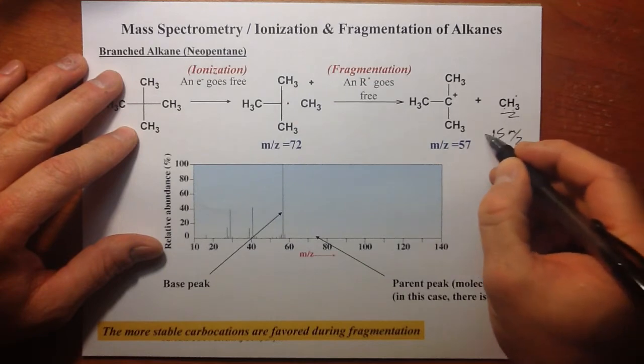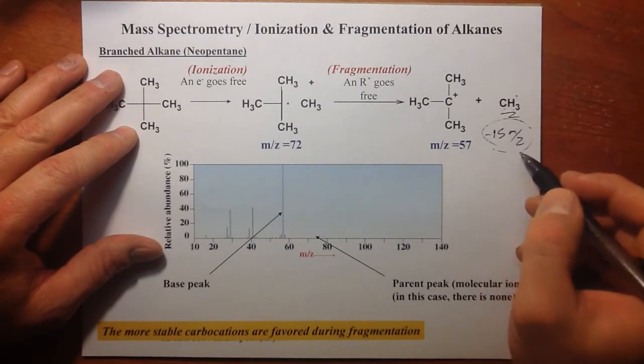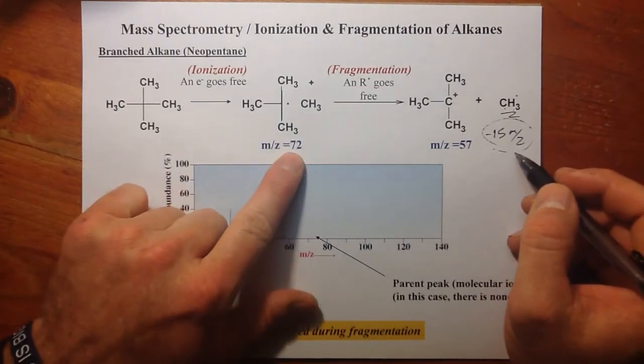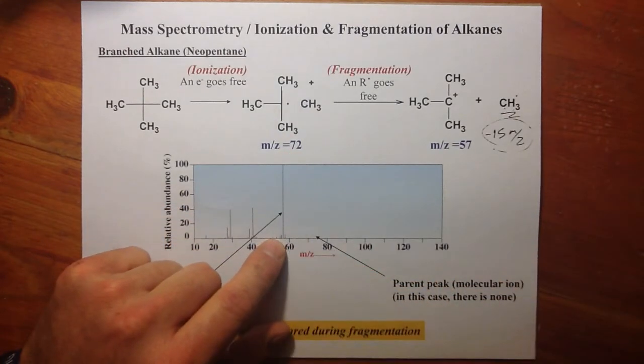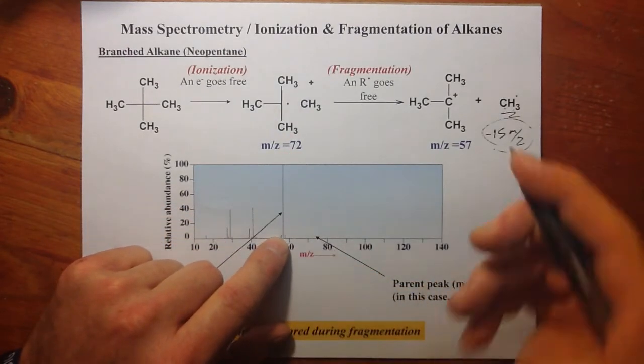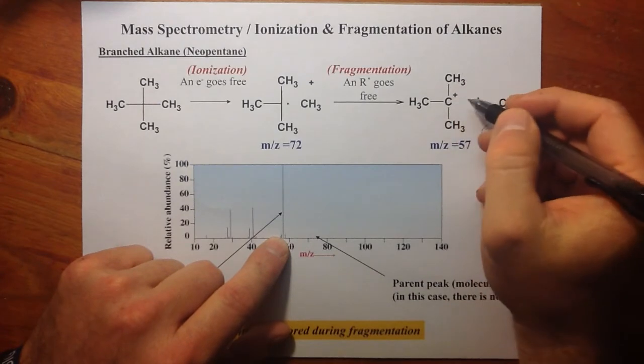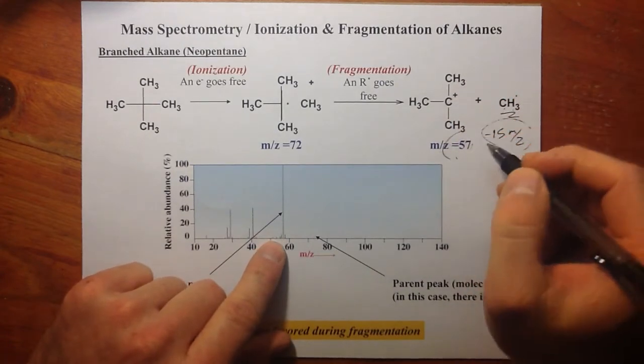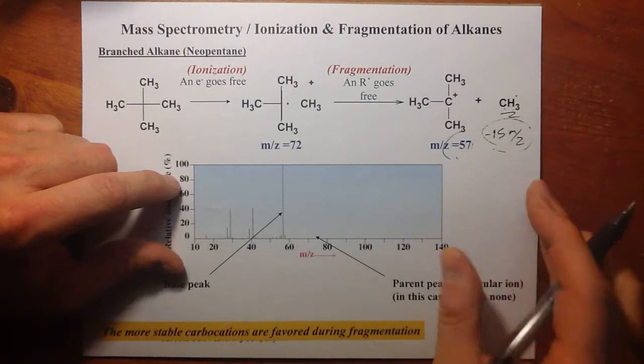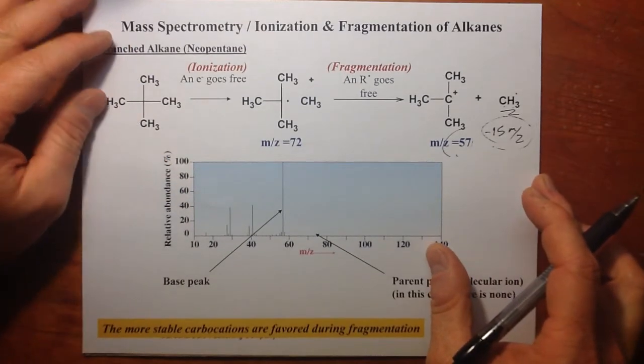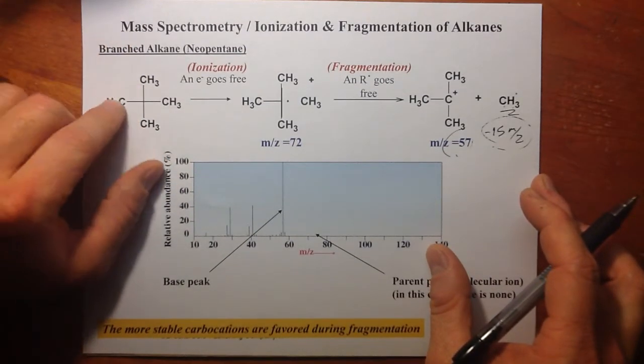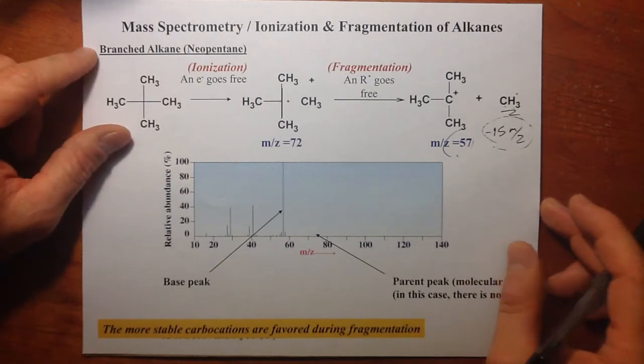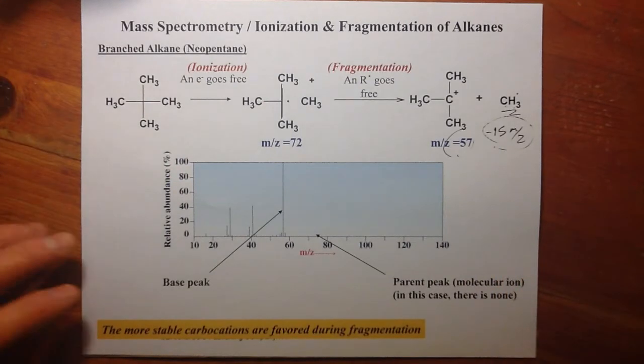So we would expect when we look at the signal or the mass spectra for 2,2-dimethylpropane, if there is fragmentation, it will favor that type where we kick off 15 M/z's: 12 for the carbon, 3 for the hydrogen. We'd expect minus 15 M/z's down from the parent peak, 72. We'd expect that ion, that tert-butyl cation. And sure enough, we see that in the mass spectra for this neopentane or 2,2-dimethylpropane.